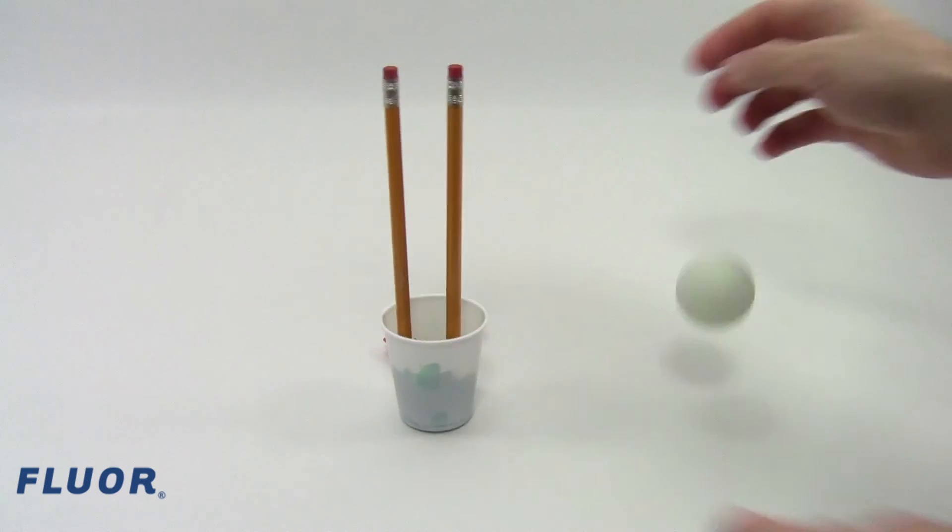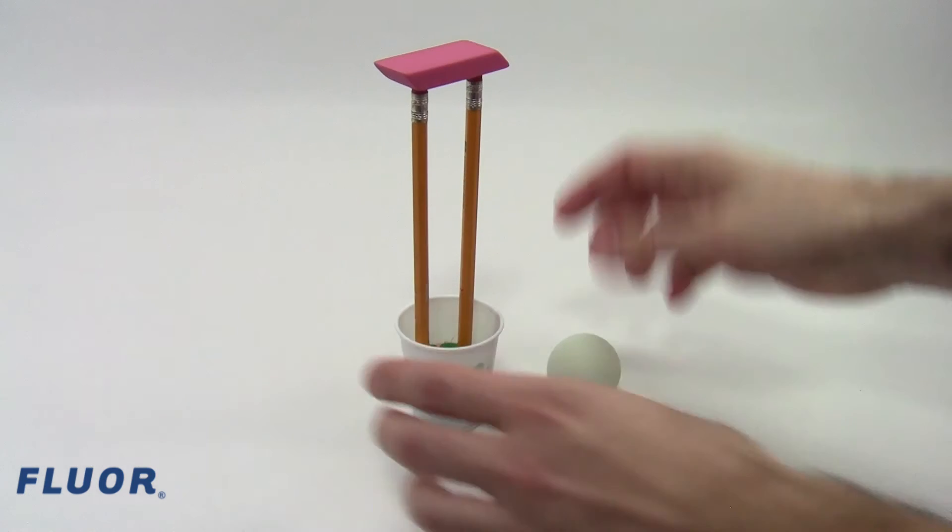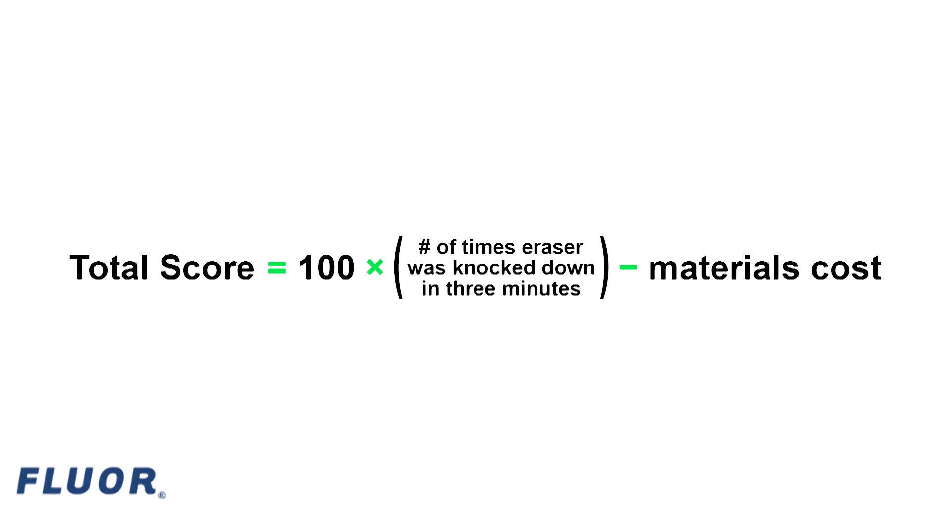After knocking the eraser down, you can quickly reset it and try again. Your final score is calculated based on how many times you knocked the eraser down within three minutes and how many materials you used to build your device.